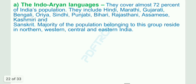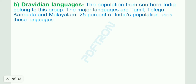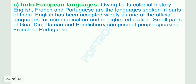On the basis of origin, languages in India can be broadly categorized into three groups. First, the Indo-Aryan languages, which cover almost 72% of India's population, include Hindi, Marathi, Gujarati, Bengali, Oriya, Sindhi, Punjabi, Bihari, Rajasthani, Assamese, Kashmiri and Sanskrit. The majority reside in northern, western, central and eastern India. Second, the Dravidian languages, spoken by the population of southern India, include Tamil, Telugu, Kannada and Malayalam, covering 25% of India's population. Third, Indo-European languages: owing to its colonial history, English, French and Portuguese are spoken in parts of India. English is widely accepted as an official language, while small parts of Goa, Daman and Pondicherry comprise people speaking French or Portuguese.